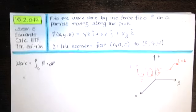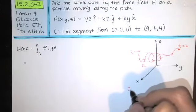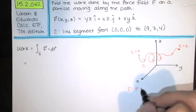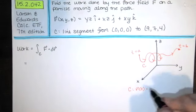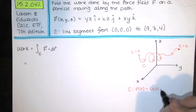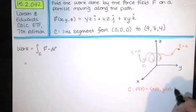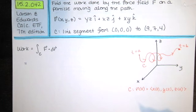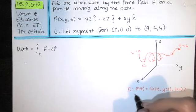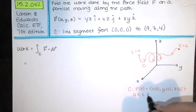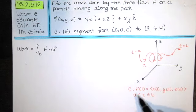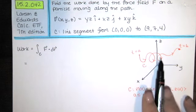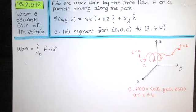That's our path C. Now, C would be given by some vector-valued function, r of t with components x of t, y of t, and z of t. We want r of t to be a piecewise smooth parameterization of C for t between a and b, so that as t changes, as we go from t equals a to t equals b, we travel along that path. We trace out the entire thing.